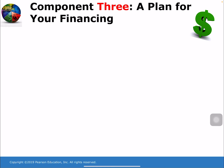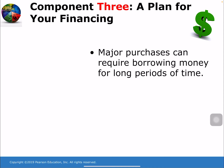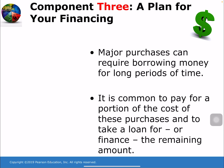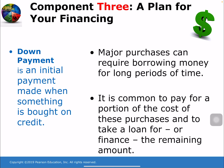Component 3 is a plan for your financing. Major purchases can require borrowing money for long periods of time. It's common to pay for a portion of the cost of these purchases and to take a loan or finance the remaining amount. A down payment is an initial payment made when something is bought on credit. For example, if you're going to purchase a car priced at $10,000, you might accumulate $2,000 for a down payment and then ask the bank for a loan of $8,000. Down payments make it less likely that you will default on your loan.